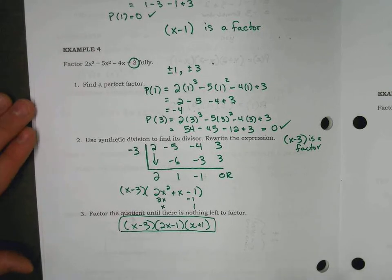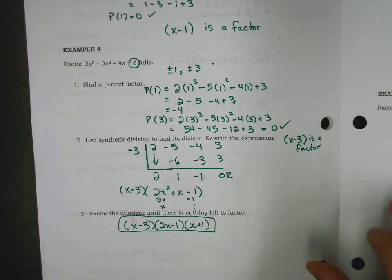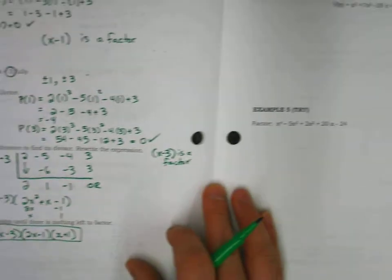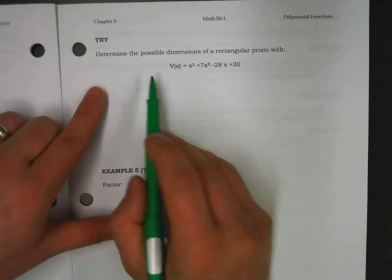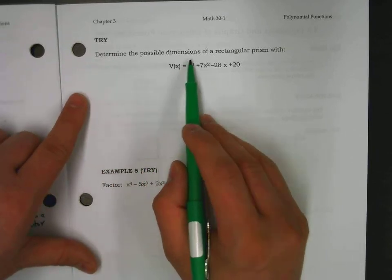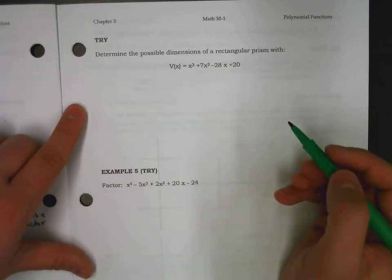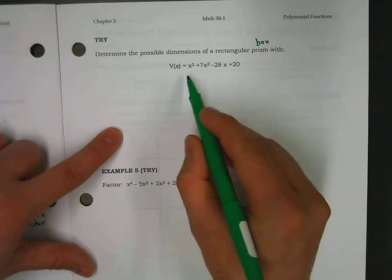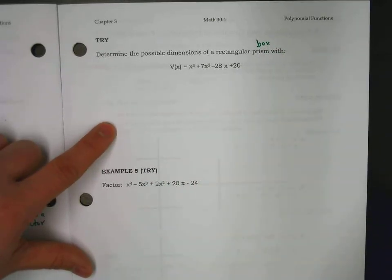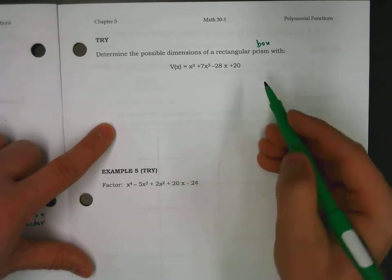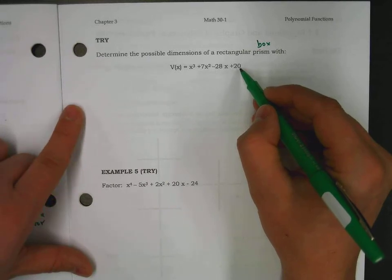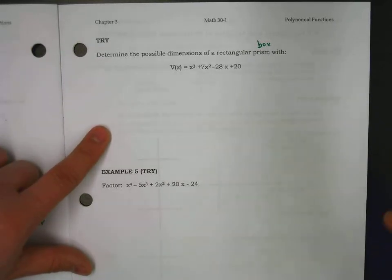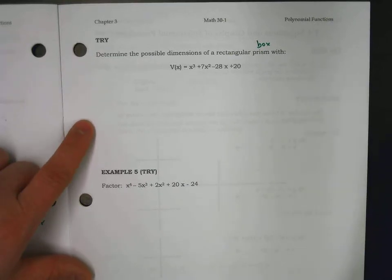That is essentially it. So, we'll look at maybe one more example. We can maybe skip the top one. If you wanted to try it, you definitely could. It asks to determine the possible dimensions of a rectangular prism or a box with that volume. So, your task would be to find one factor by testing positive negative 1, positive negative 2, positive negative 4, positive negative 5, 10, 20, lots of possibilities.